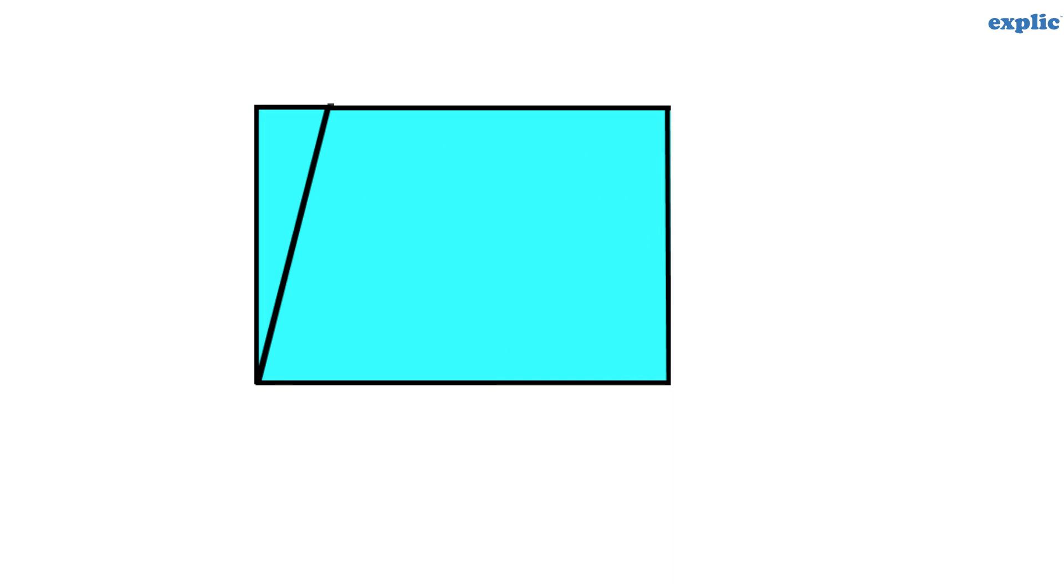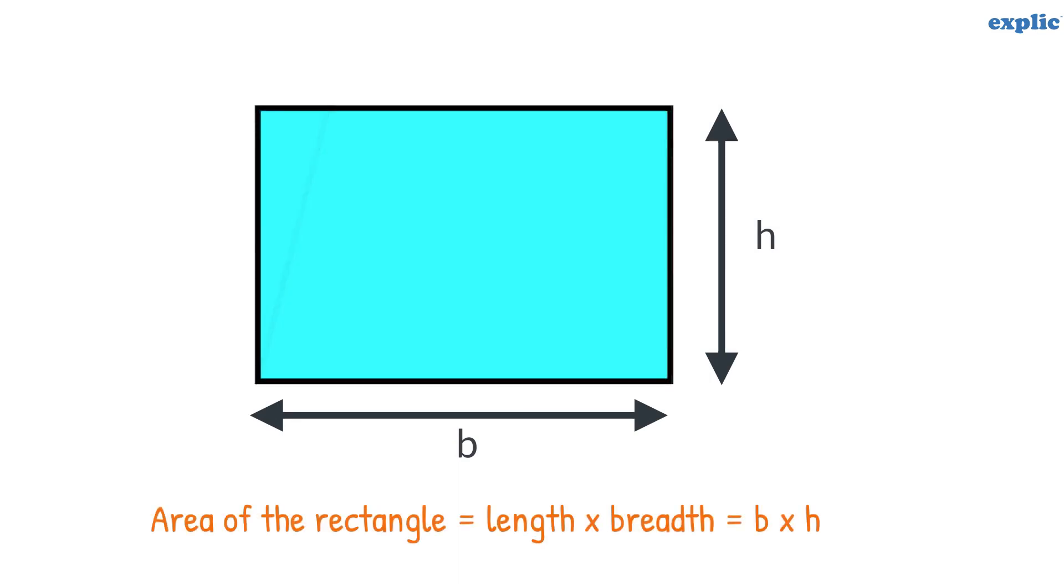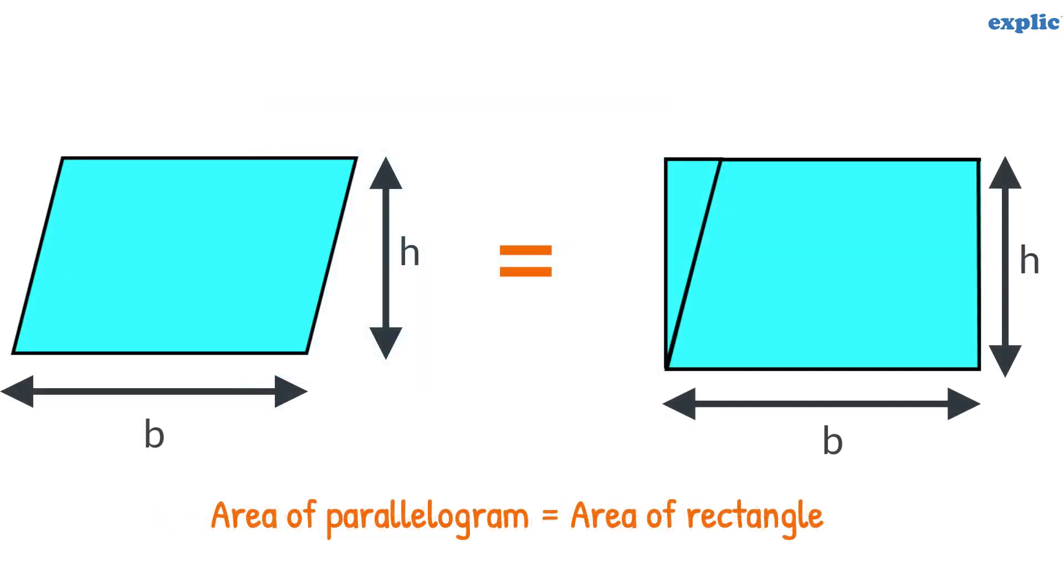Does it make a perfect rectangle of base P and height H? As we know that the area of a rectangle is the length multiplied by the breadth. Since the rectangle is made of the parallelogram, the area of both shapes would be equal.